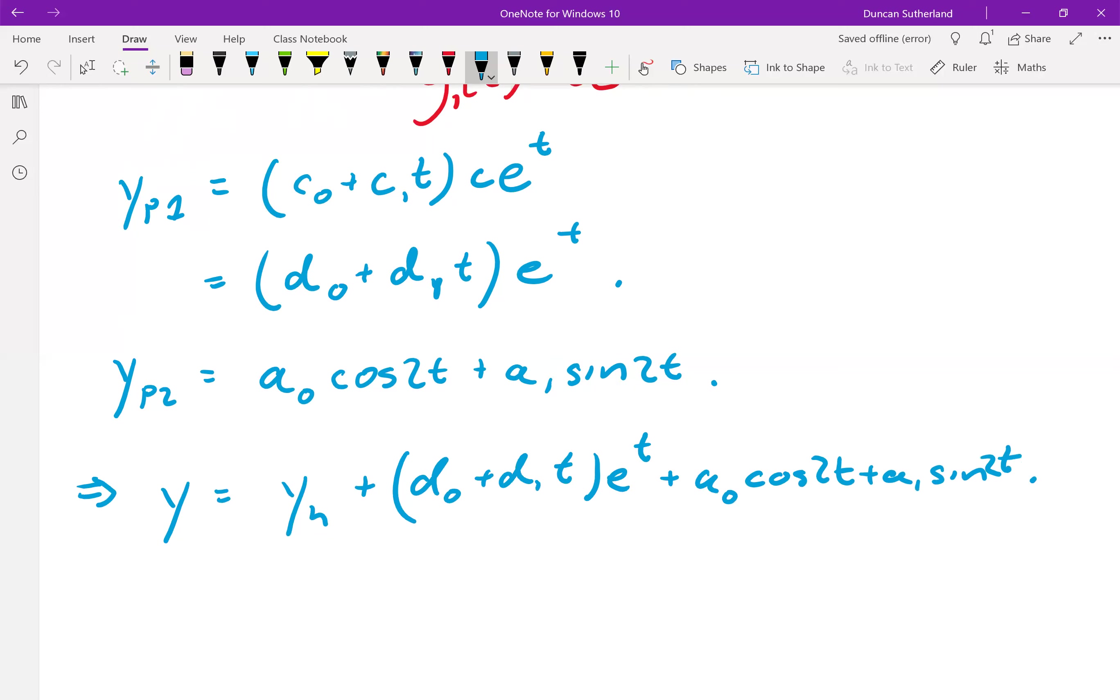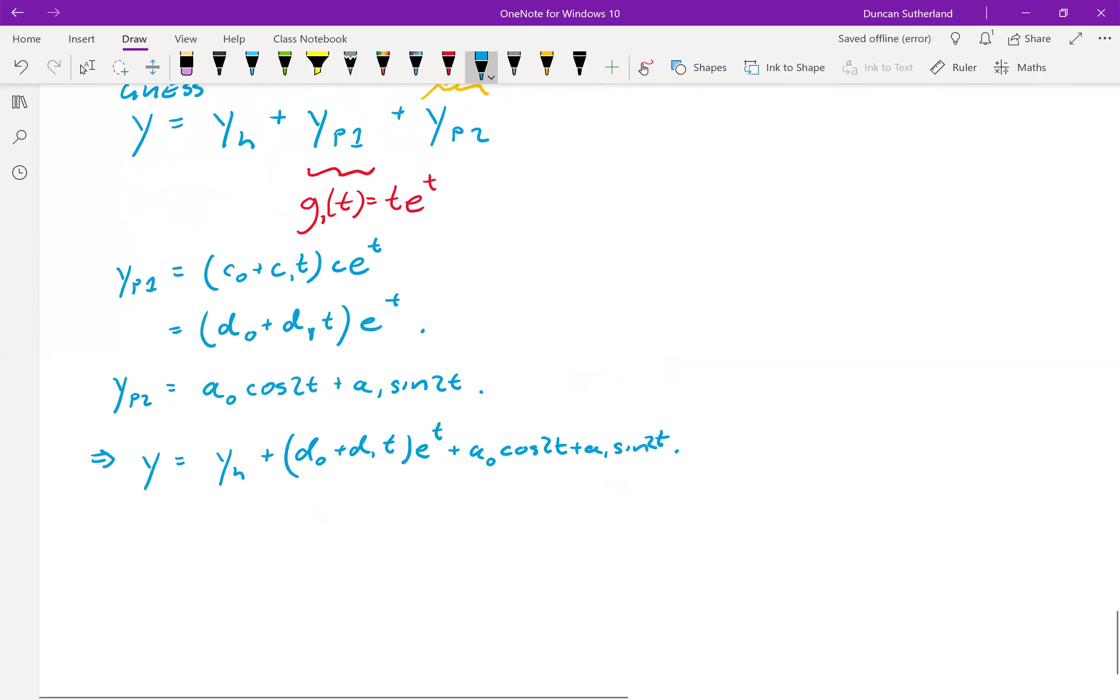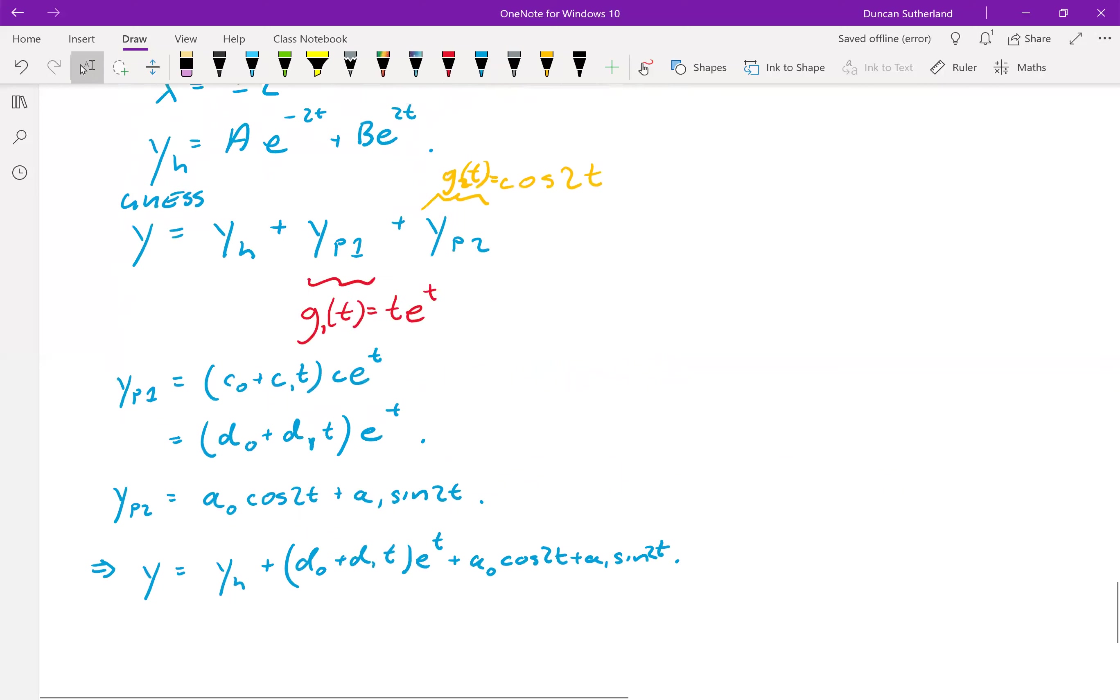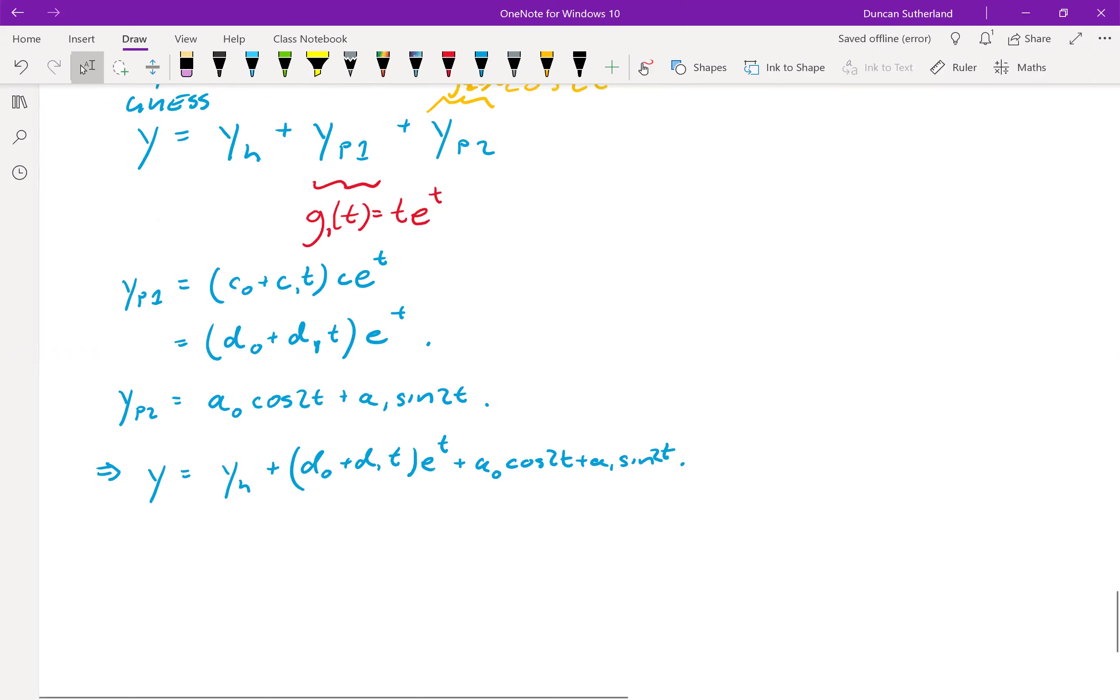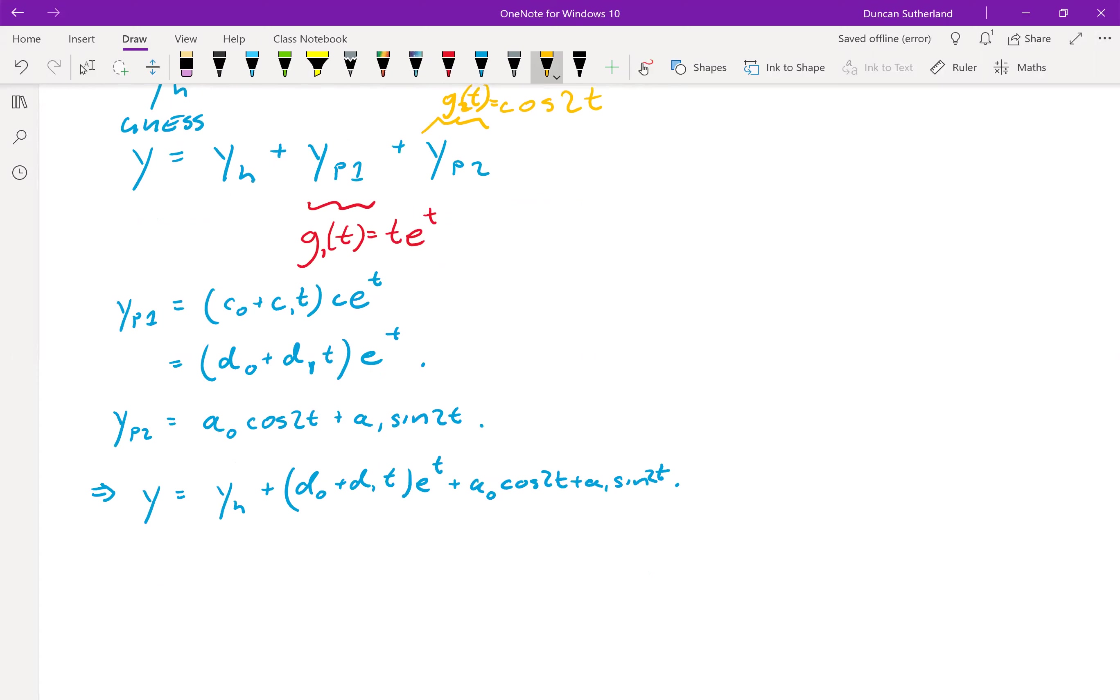When we put all this together, our guess is y equals y homogeneous plus... OK. Now that we've got all this junk, we can do our equation as we normally would. It's just quite long. So remember what happens to the homogeneous part. That always disappears. So I don't have to worry about that. I'm just going to have to substitute all of this into my ODE.